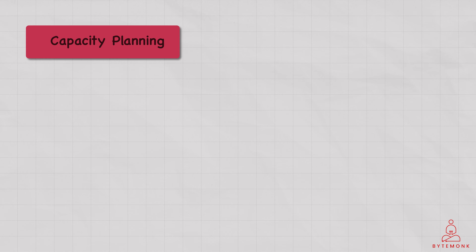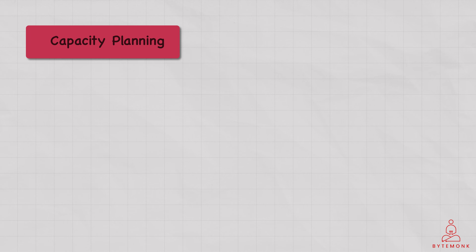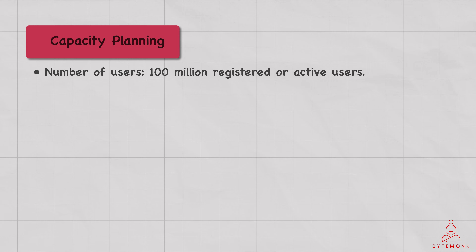Capacity planning is usually optional but sometimes plays an important aspect of system design interviews, because it demonstrates the ability of the candidate to think through the scalability requirements of the system being designed. Here is an estimate of the capacity planning for the YouTube system design based on the requirements provided. Now these are some hypothetical numbers to help you just get started. Let's say the number of users we have is 100 million registered or active users.